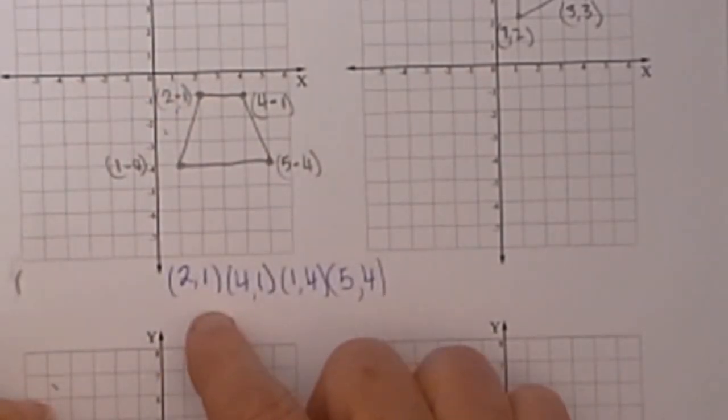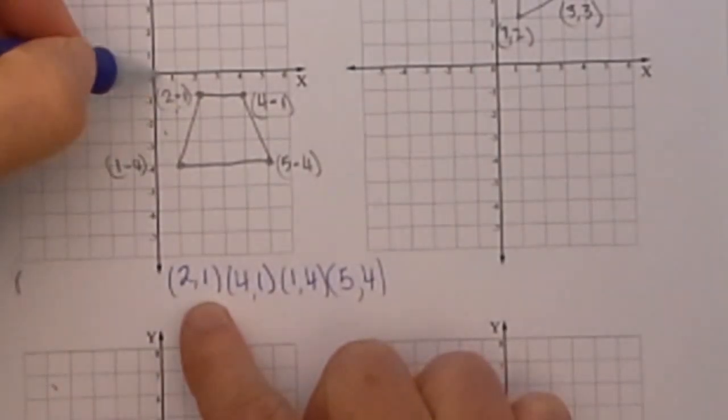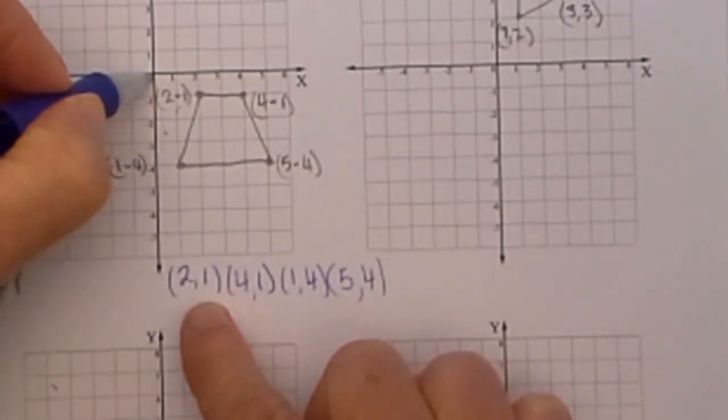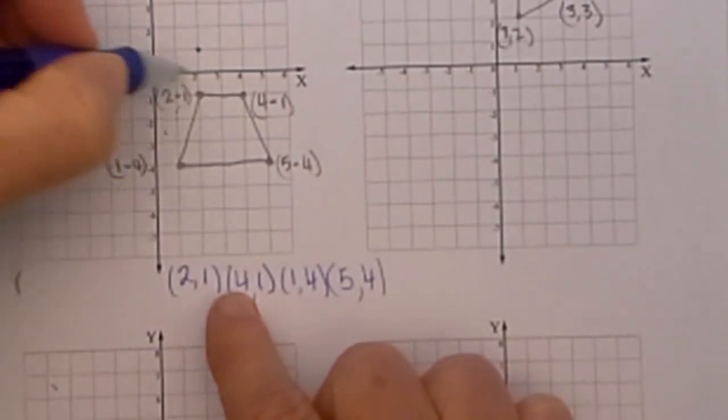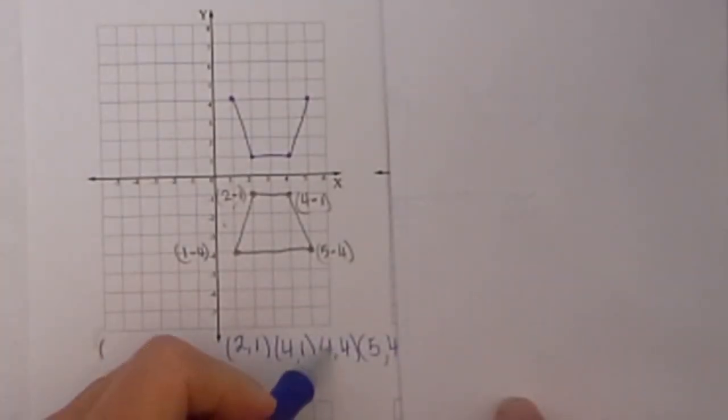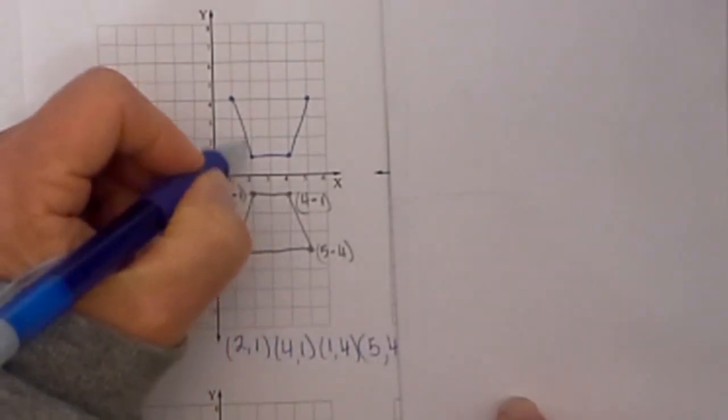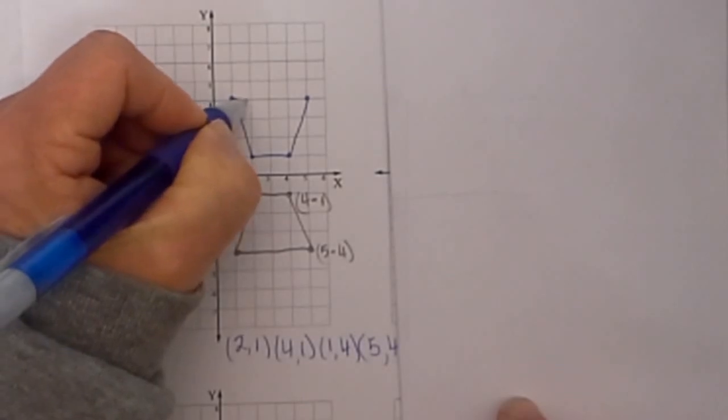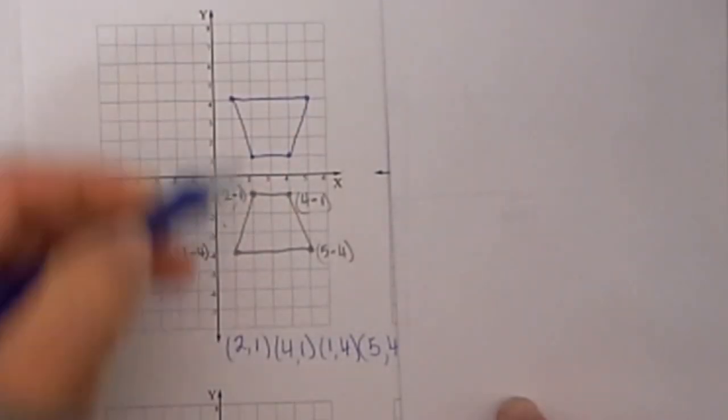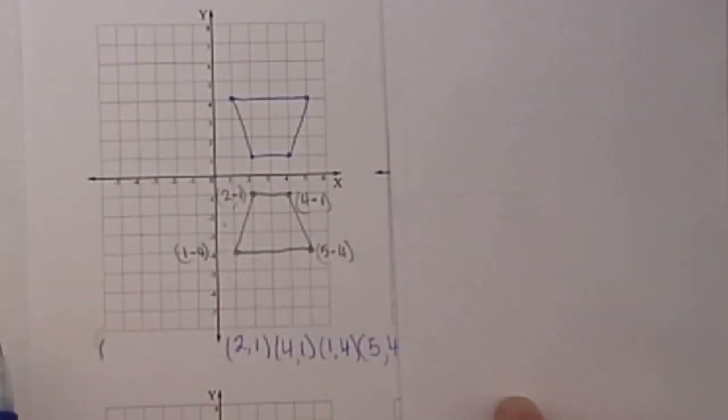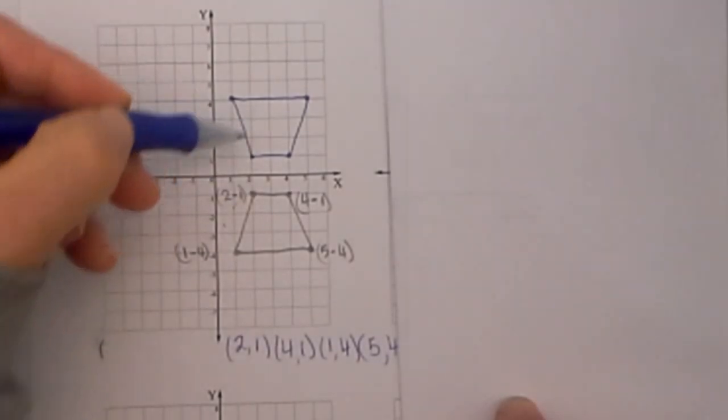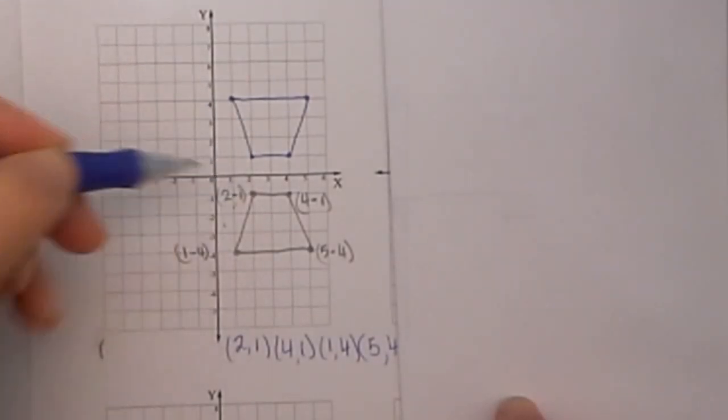Then all I have to do is plot these. So I am going to go (2, 1). The x is always the first. Then we go (4, 1). Then we go with (1, 4), and (5, 4), and then I am going to connect the dots. You will see that it is a nice reflection. That is reflecting over the x, x stays the same, the y changes.